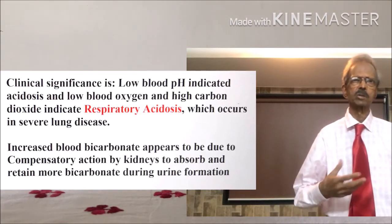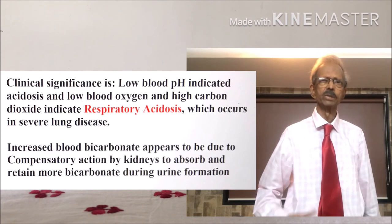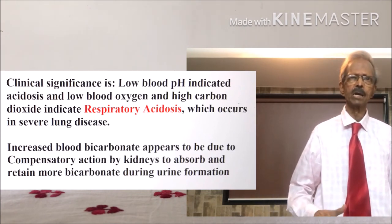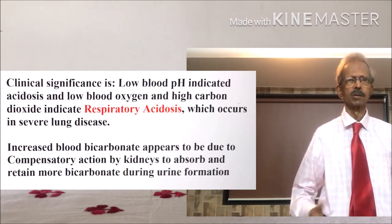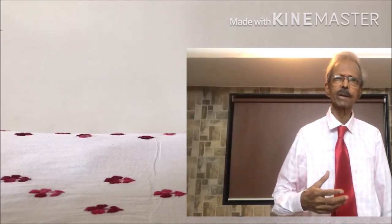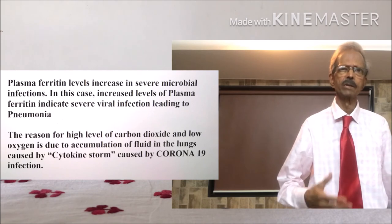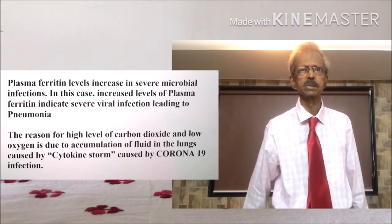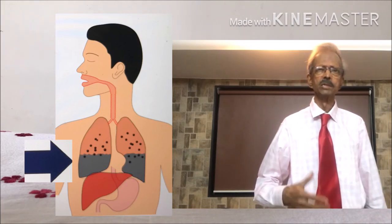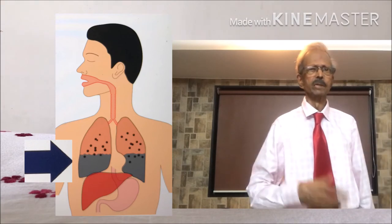Low blood pH indicated acidosis, and low blood oxygen with high carbon dioxide indicated respiratory acidosis, which occurs in severe lung disease. The reason for high carbon dioxide and low oxygen is accumulation of fluid in the lungs caused by the cytokine storm due to coronavirus infection.